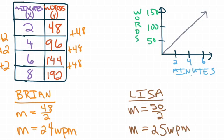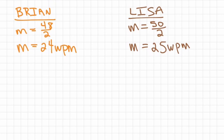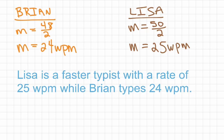With these two functions, we don't need to worry about initial value because both have an initial value of 0 — neither student gets a head start or delays before typing. Brian types 24 words per minute and Lisa types 25 words per minute. Therefore, we can conclude that Lisa is a faster typist with a rate of 25 words per minute, while Brian types 24 words per minute.